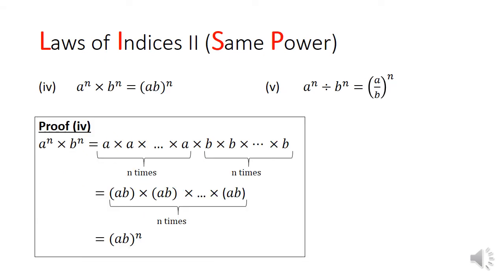Law 4 and 5 deal with indices of the same power. In law 4, a to the power of n multiplied by b to the power of n is equal to ab in brackets to the power of n. The proof is simply a rearrangement of the a's and the b's to form n sets of ab terms. In law 5, a to the power of n divided by b to the power of n will give us a divided by b in brackets to the power of n. I will skip the proof of law 5 to the viewer as it is very similar to law 4.